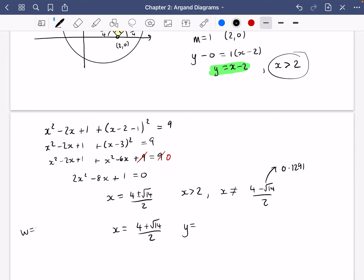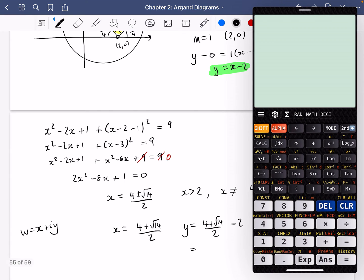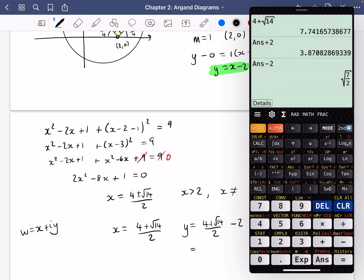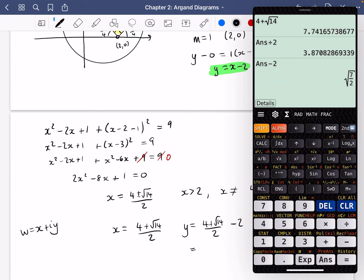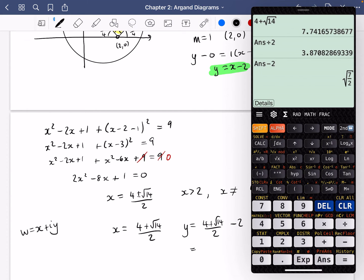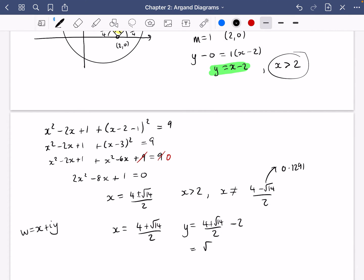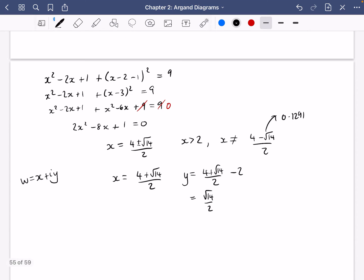Now if you want to find the y value of w, remember w is x plus iy here. Then we're just going to take the x value, which is 4 plus root 14 over 2, and we're going to subtract 2 from it. So 4 plus root 14 over 2, subtract 2, and we get root 14 over 2. So we get that w is equal to 4 plus root 14 over 2, plus root 14 over 2, i.